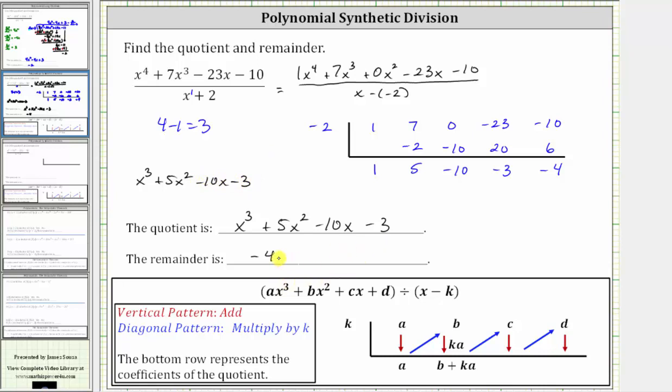And then because the remainder is negative four, we sometimes write minus four over the divisor of x plus two. So depending on your textbook, you may express the final result in this form, or the quotient and remainder separately. I hope you found this helpful.